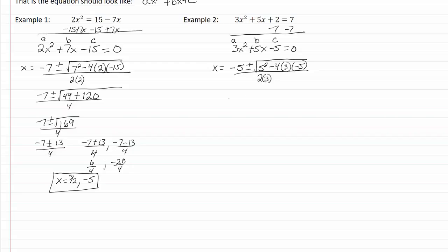So let's get this a little simpler. We have negative 5 plus or minus the square root of 25. We have negative times the negative which will be plus and we're going to get 60 there all over 6. So I now have negative 5 plus or minus the square root of 85 all over 6.